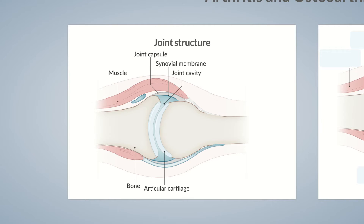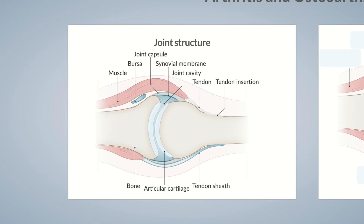Muscles are attached to the bone and help move the joint. At the end of the muscle is the tendon, which inserts into the bone. The tendon is surrounded by a tendon sheath, a synovial membrane layer that allows the tendon to stretch. Some synovial joints also have at least one bursa that acts as a cushion, reducing the friction between bones and muscles.